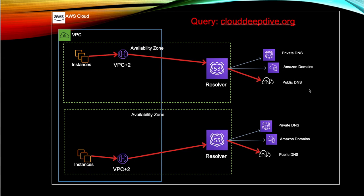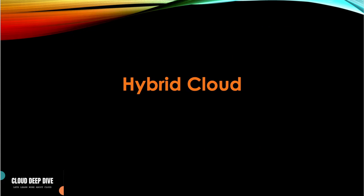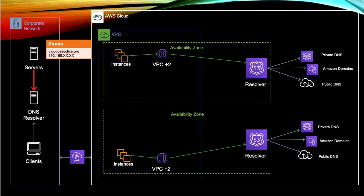I already explained all of this in my previous video — I'll provide the link in the description. If you want to see how DNS resolution works in detail, please go ahead and watch that. So that was Route 53 Resolver. Next, let's talk about what challenges we had which these endpoints solved.